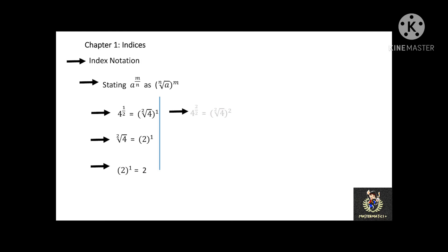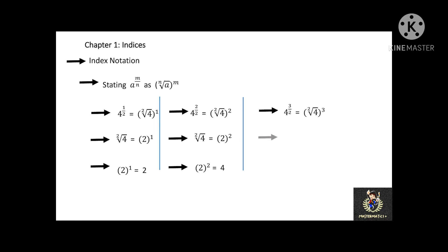Next example: 4 to the power of 2 over 2 is equal to the square root of 4 to the power of 2, where the square root of 4 is equal to 2, then 2 to the power of 2 is equal to 4. And the last example: 4 to the power of 3 over 2 is equal to the square root of 4 to the power of 3, where the square root of 4 is equal to 2, then 2 to the power of 3 is equal to 8.